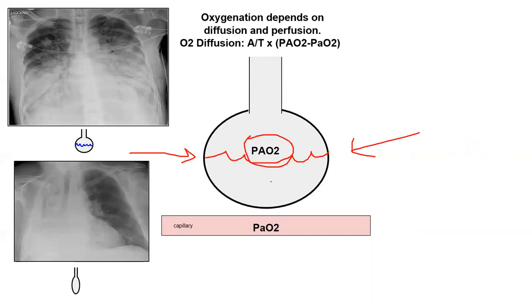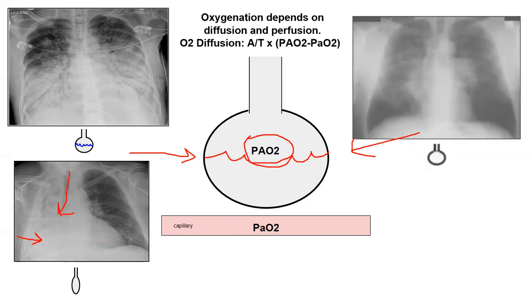How about an older patient who just got out of the ICU, has trouble clearing secretions, and on night float you're called for acute onset hypoxia? Mucus plug. Anytime you see white-out of the lung: if it's absorptive atelectasis from a plug, the trachea deviates toward it; if it's a pleural effusion or pneumothorax, the trachea deviates away.